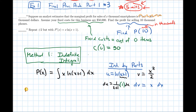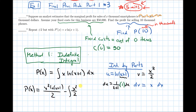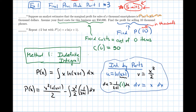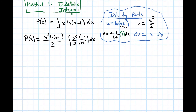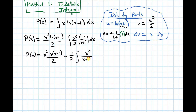Using the integration by parts formula, we get P(x) = uv minus the integral of v du, which gives us x²·ln(x+1)/2 minus the integral of (x²/2)·(1/(x+1)) dx. We can pull out the 1/2, giving us (1/2) times the integral of x²/(x+1) dx.